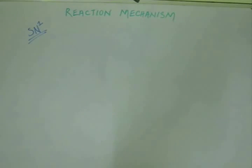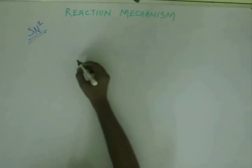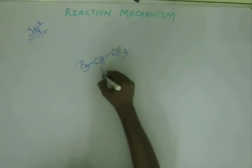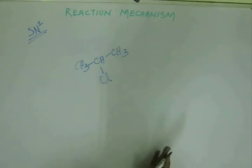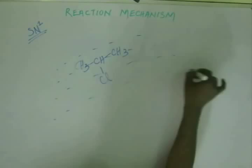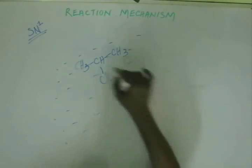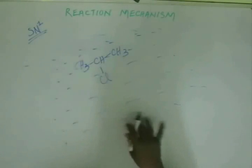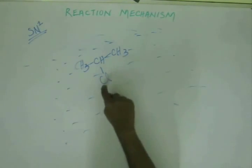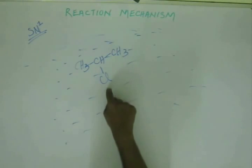SN1 — Substitution Nucleophilic Unimolecular. Let's get to the nerve of this mechanism quickly, straight away. Suppose I have a substrate and there is a solvent in which the substrate is kept. We already know what solvation is. Solvation would start to occur — solvent will surround the substrate from all sides. If the solvent is polar, then there will be a force of attraction between the substrate and the solvent, and some energy will be released because of that attraction.